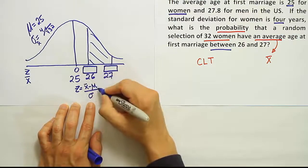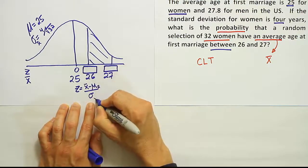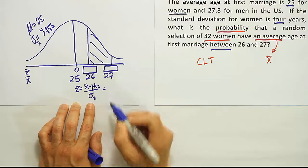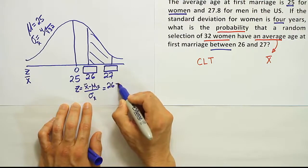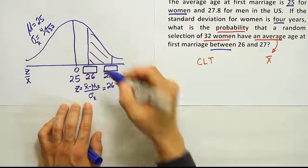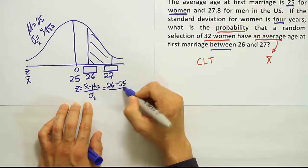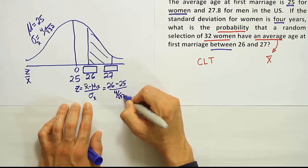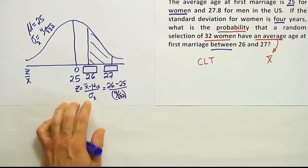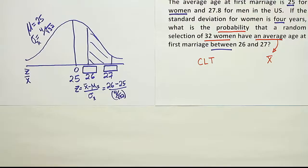So let's do that first for the 26. Remember that Z is equal to X minus the mean over sigma. Well, here we have X-bar minus the mean for X-bar over sigma of X-bar. But that's really just notation. Essentially, it doesn't really change what we've been doing since before. If I want to convert this number 26, I put 26 down, I take the mean from up here, 25, and then I divide by this quantity, 4 divided by the square root of 32. Just be careful when you do that.